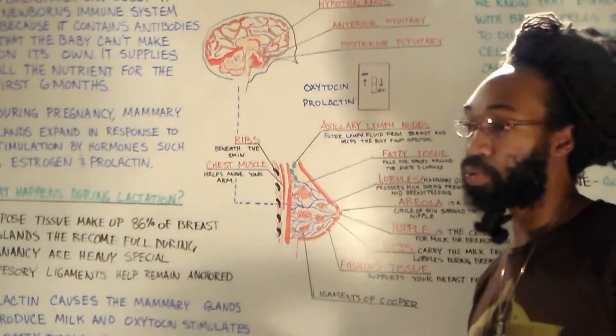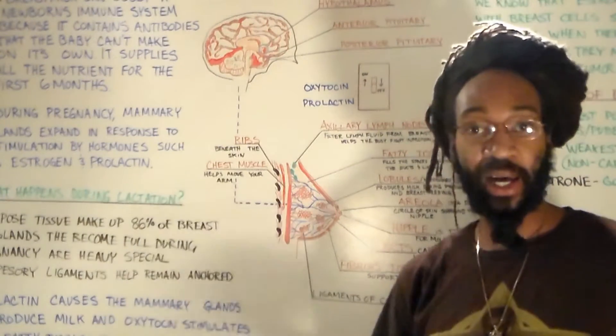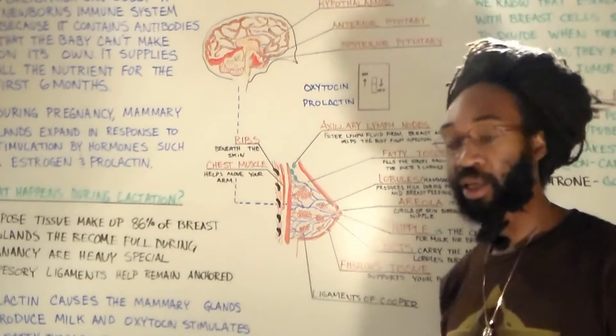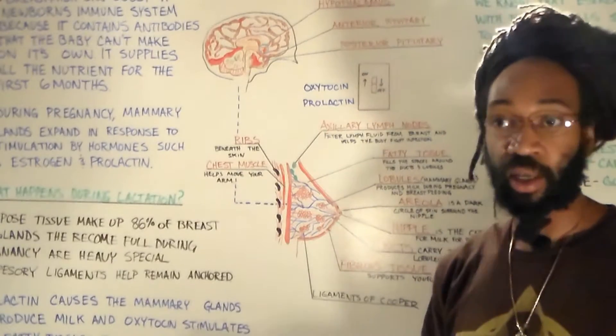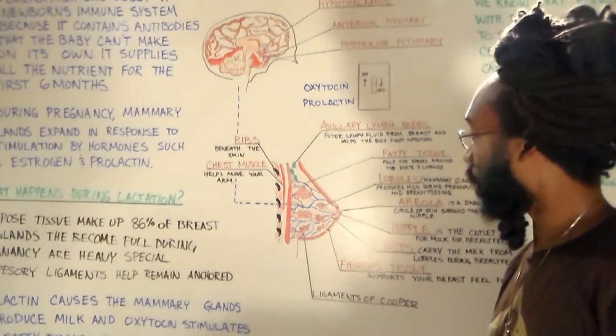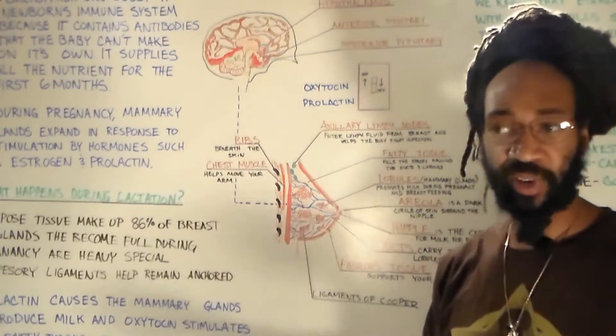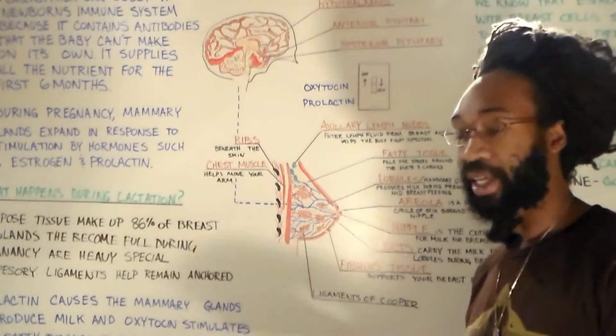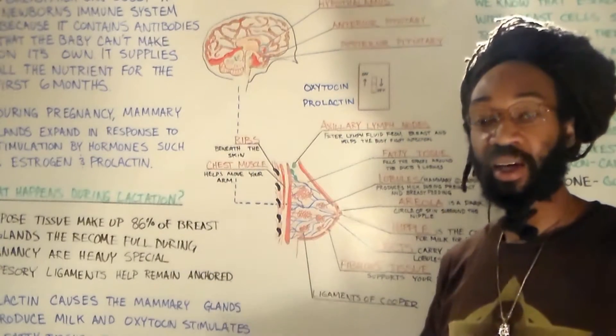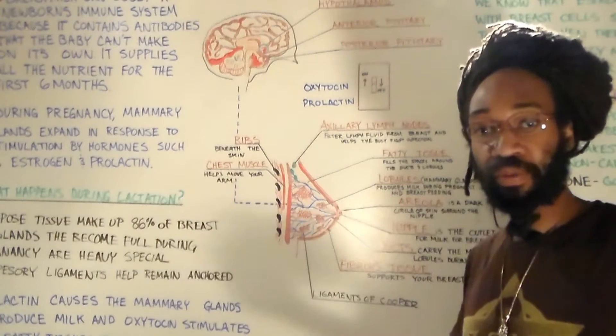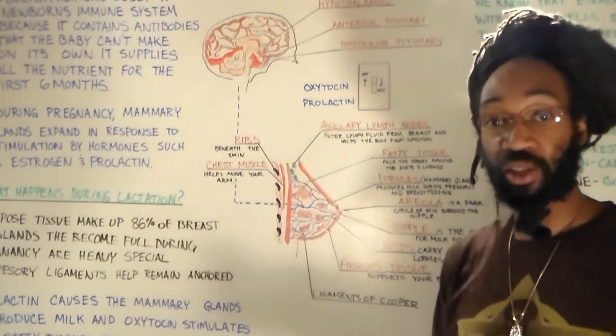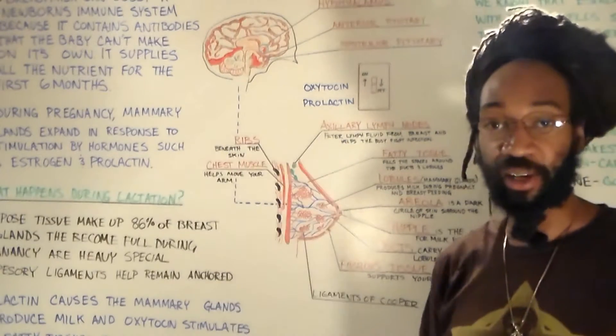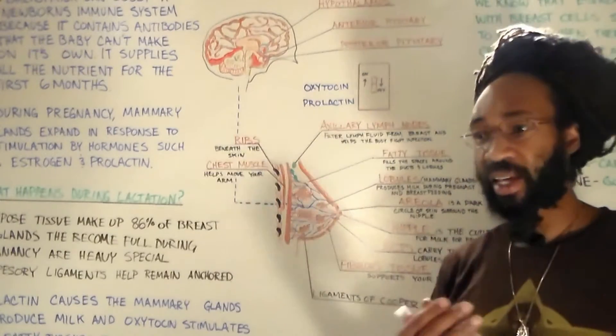And this fluid is what they call a lipoid fluid. Lipoid fluid is there to moisturize the nipple so it doesn't become dry, so it does not become cracked. It is there also, and research studies have found that this lipoid fluid is secreting a scent, like a mild little odor that the baby is attracted to. That's how they're able to find a nutrient source.